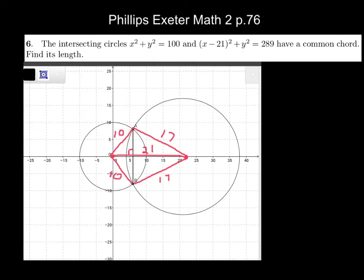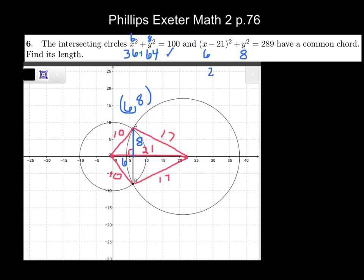Where do you think this line crosses the x-axis? Alexa says 6. If it crosses at 6, what would the height be? That would be 8 — a 6-8-10 right triangle. Let's double-check: substituting (6, 8) into the first equation gives 36 + 64 = 100. ✓ Substituting into the second equation: (6−21)² + 64 = (−15)² + 64 = 225 + 64 = 289. That checks too.